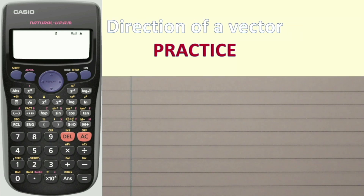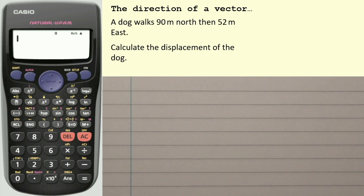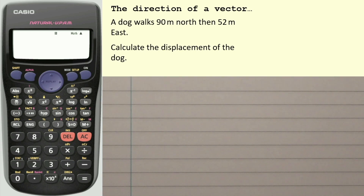Let's have a quick look at an example which says a dog walks 90 metres north, then 52 metres east. Calculate the displacement of the dog. I'm not going to be answering this question using a scale diagram — I'll be doing this mathematically.